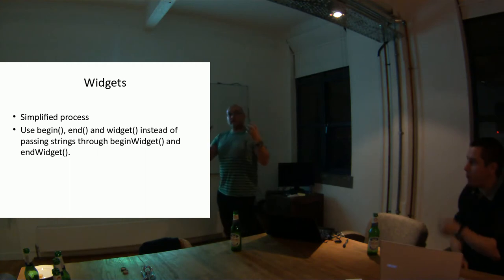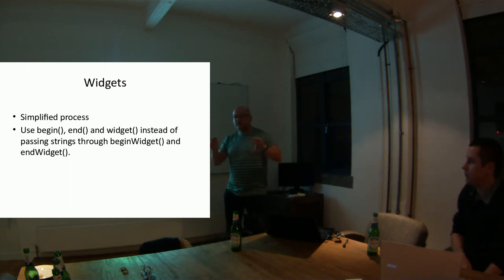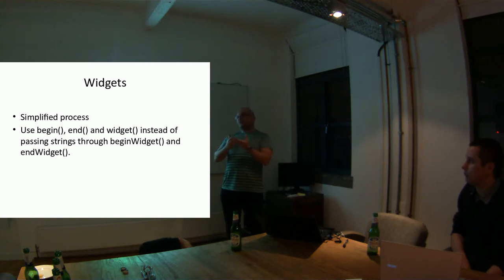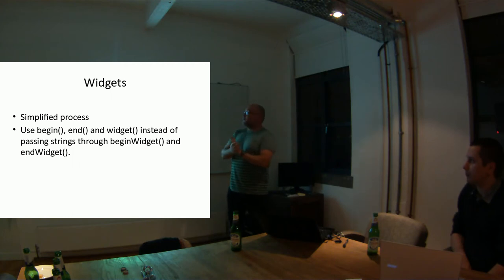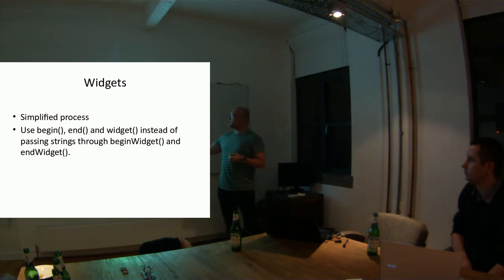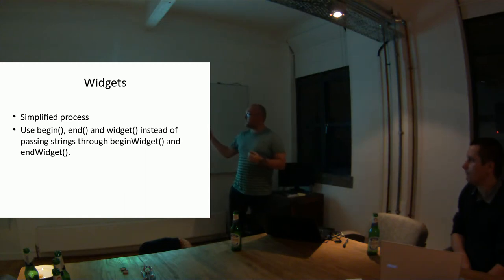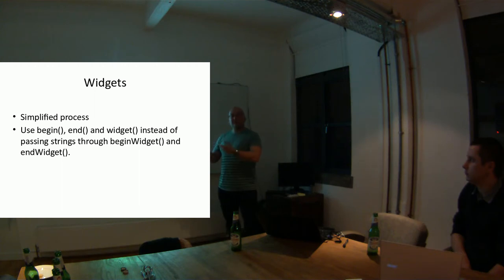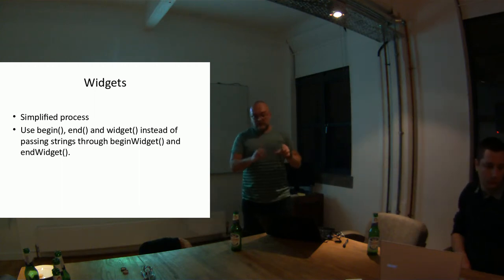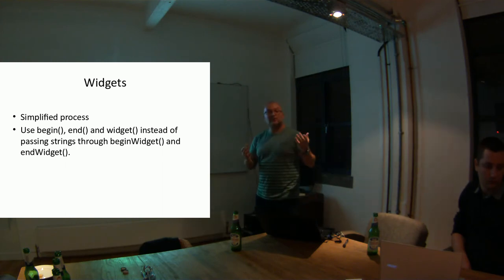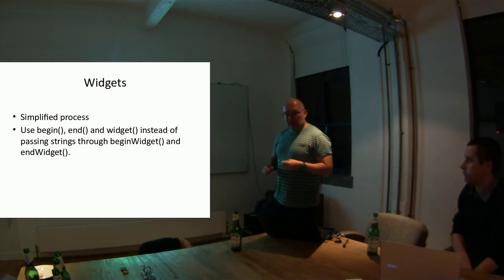When you develop in E, you're always thinking about making components, making things modular, separating things — and part of this process is creating widgets. Widgets are components that render information in a specific way. Now they are being simplified. In the past you had to pass strings and a lot of information through begin-widget and end-widget. Now you instantiate them and use the begin, end, and widget methods. I appreciate these things will be better explained with examples, but I didn't want to take all your time with nitty-gritty details.